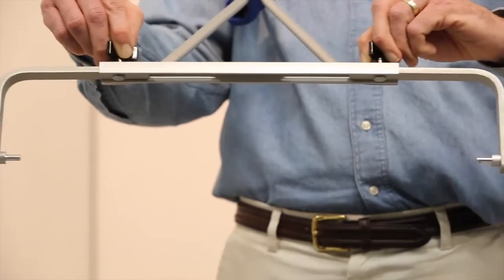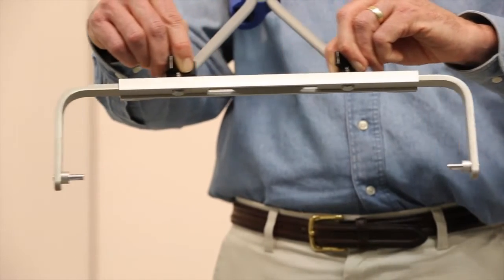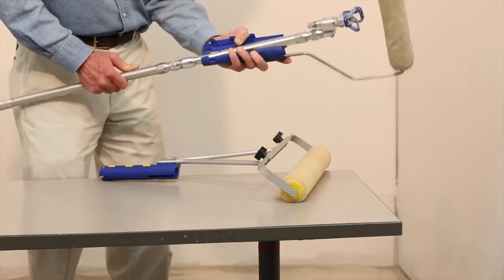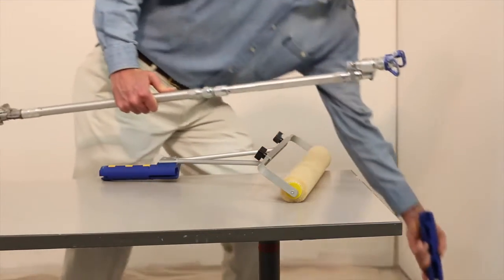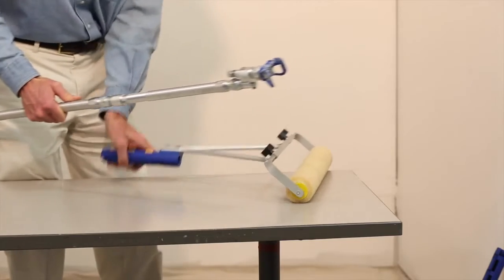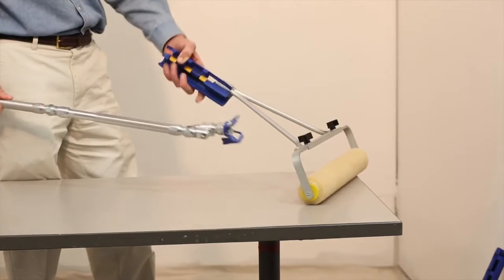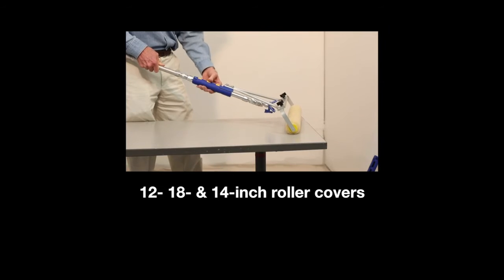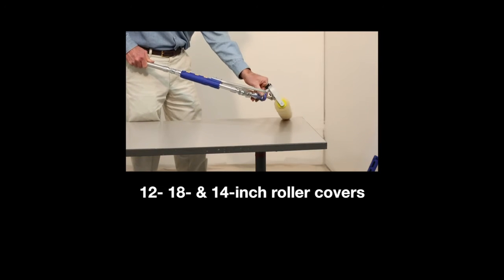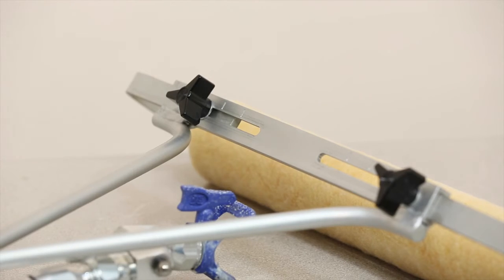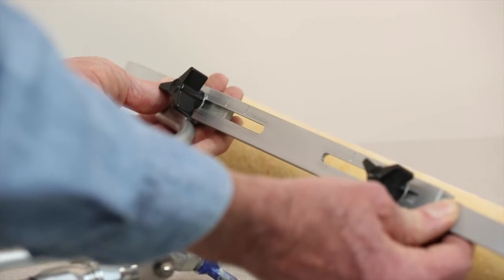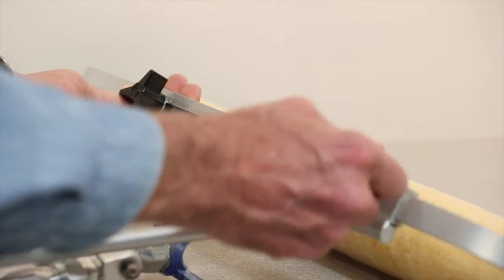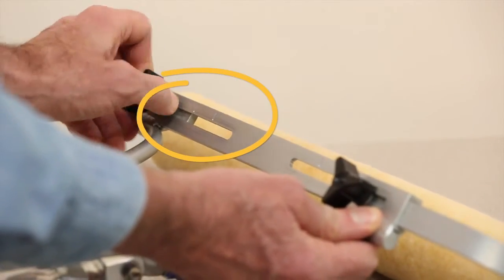The 18-inch adjustable version is available as just the handle or as a complete system. The handle is interchangeable with the 9-inch version. The 18-inch jet roller is used for larger areas and adjusts to hold 12, 18, and 14-inch roller covers. It has the identical setup to the 9-inch with one difference. When changing roller cover widths, remember to center the roller on the spray tip using the guides on the frame.